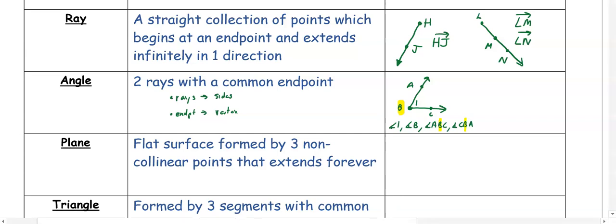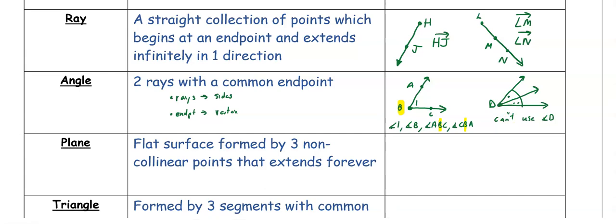Using three letters is a good practice because if a vertex D has multiple angles meeting at it, you can't use just angle D as a name — you wouldn't know which angle you're talking about: this angle, that angle, or the whole large angle. So if there are multiple angles at a vertex, you have to name it by three letters.